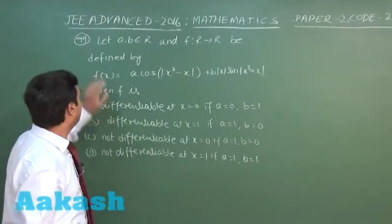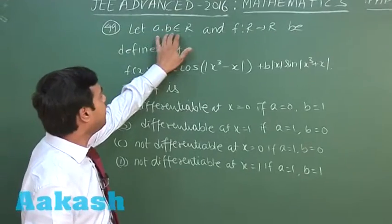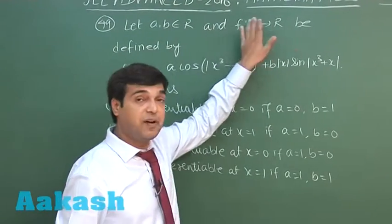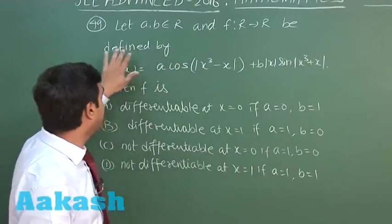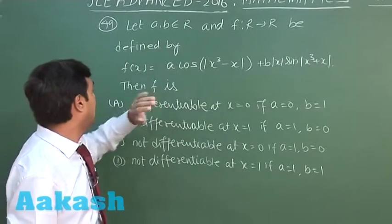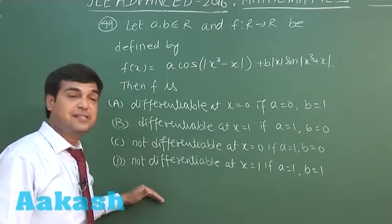Let's talk about question number 49. Let a, b, ∈ ℝ (real numbers). f is defined from the set of reals to the set of reals as this one. Then which of the following is correct?